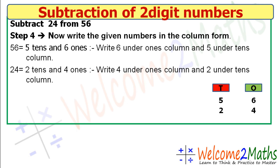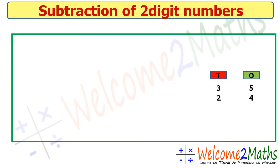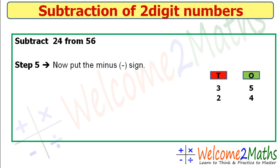Always remember: you always write the larger number in the top position when subtracting using the column method. Step number five: put the minus sign, and always place the minus sign on the left side.